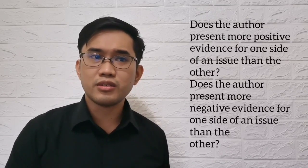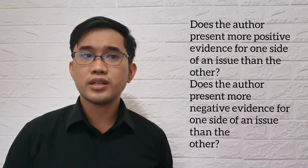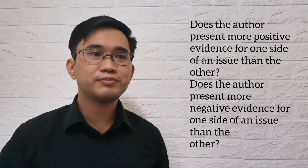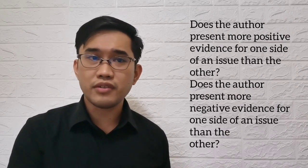When an author does not directly acknowledge his or her own bias, the reader must look at the author's diction or the use of facts and opinions. We can ask ourselves two questions: First, does the author present more positive evidence for one side of an issue than the other? Second, does the author present more negative evidence for one side of an issue than the other? These are both clues that the author may be biased.